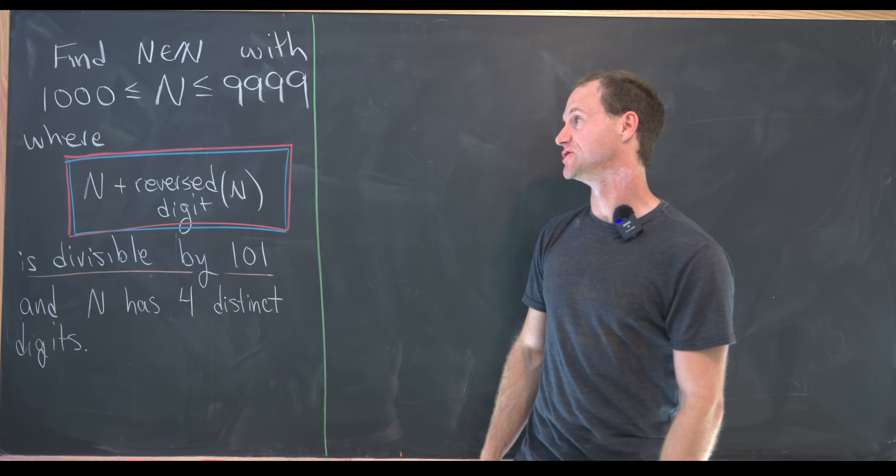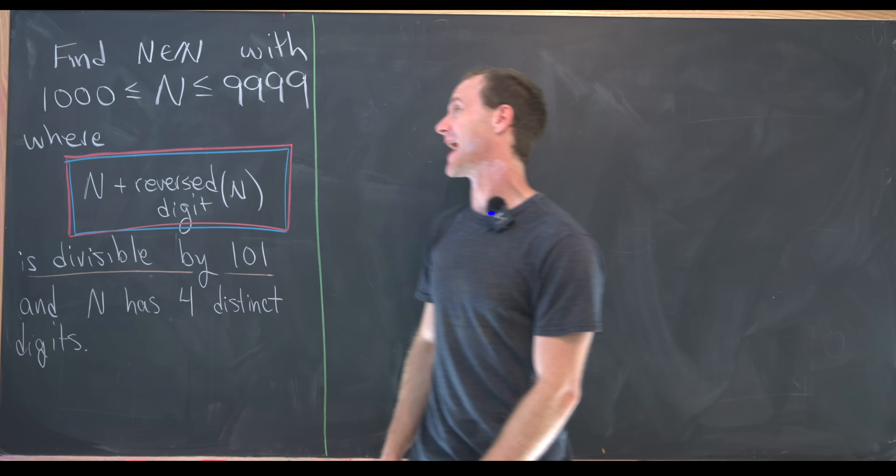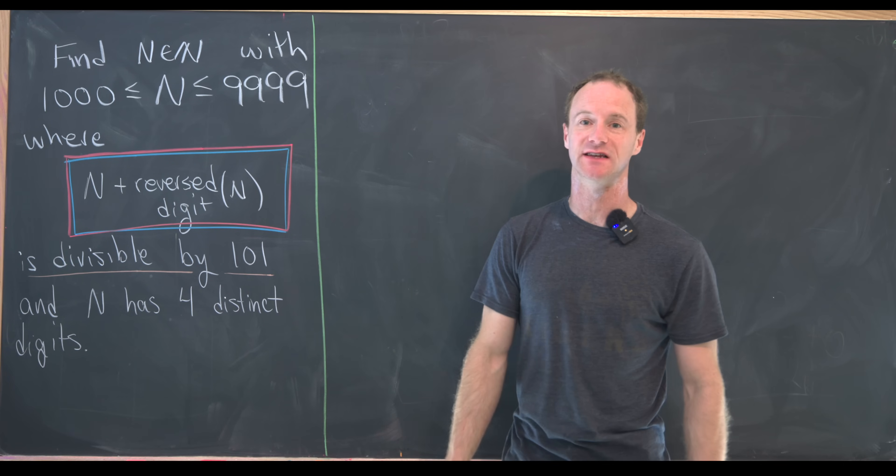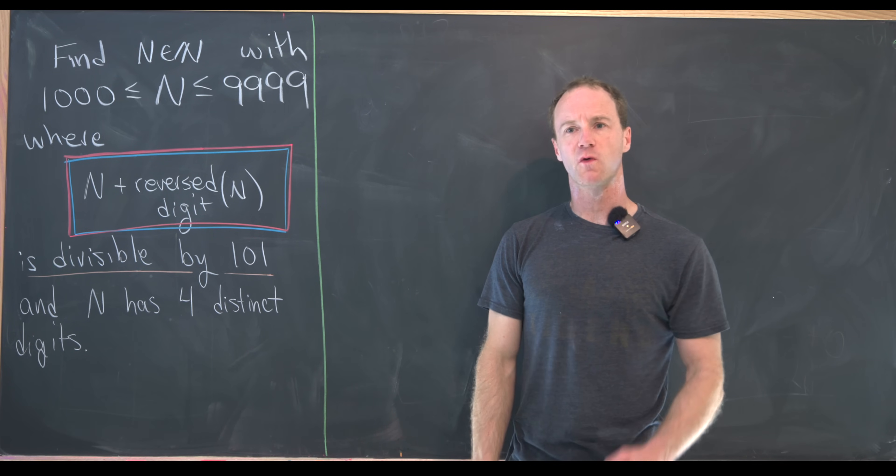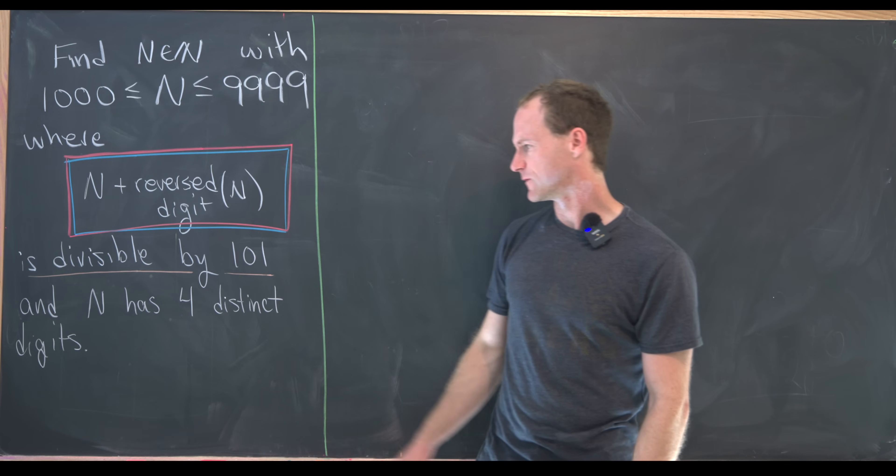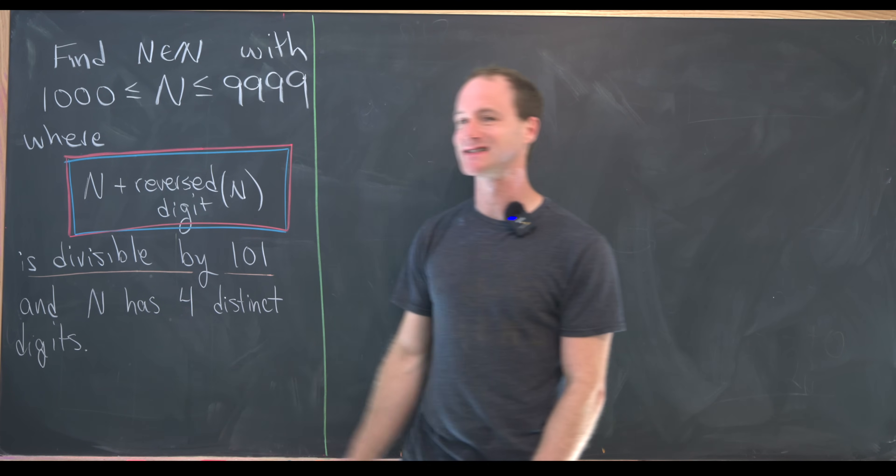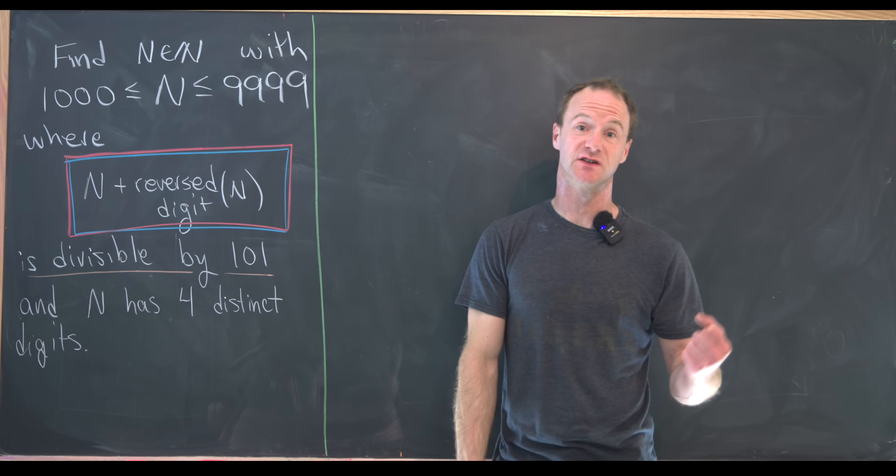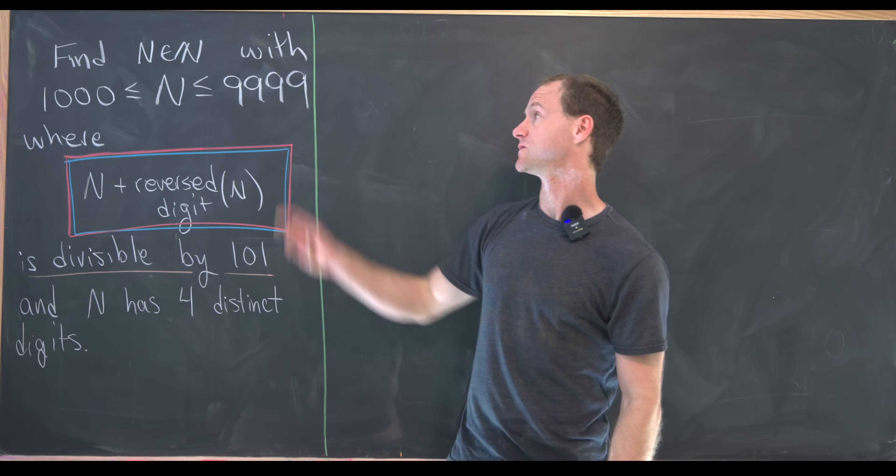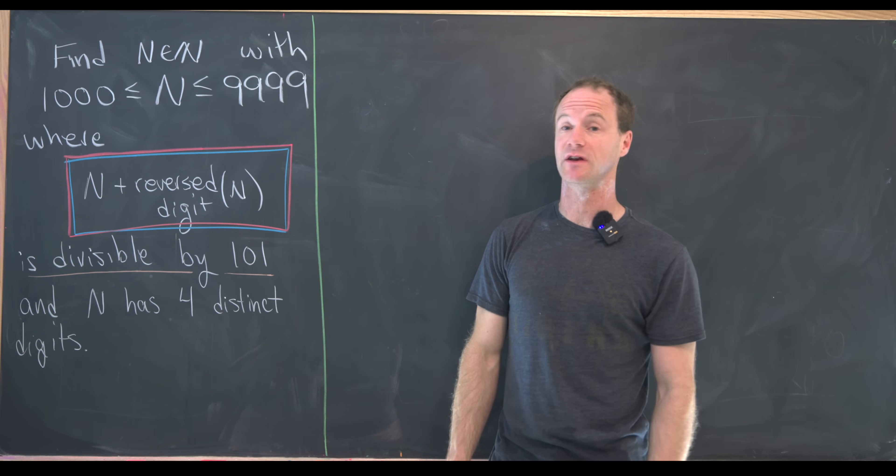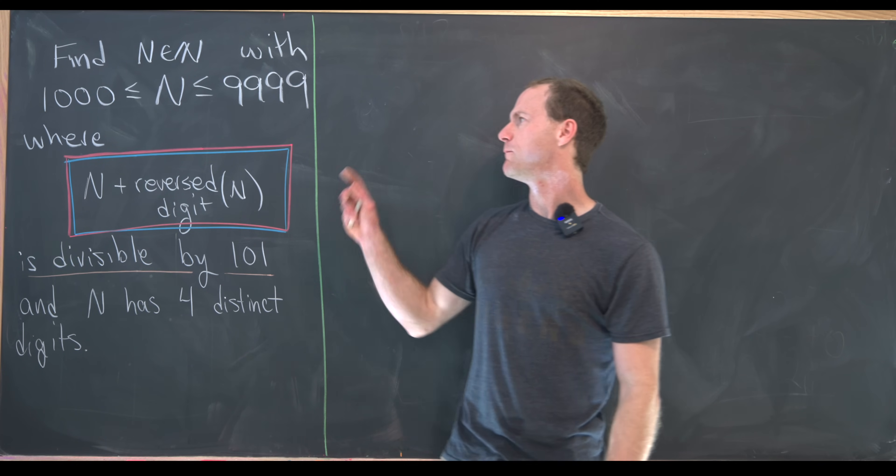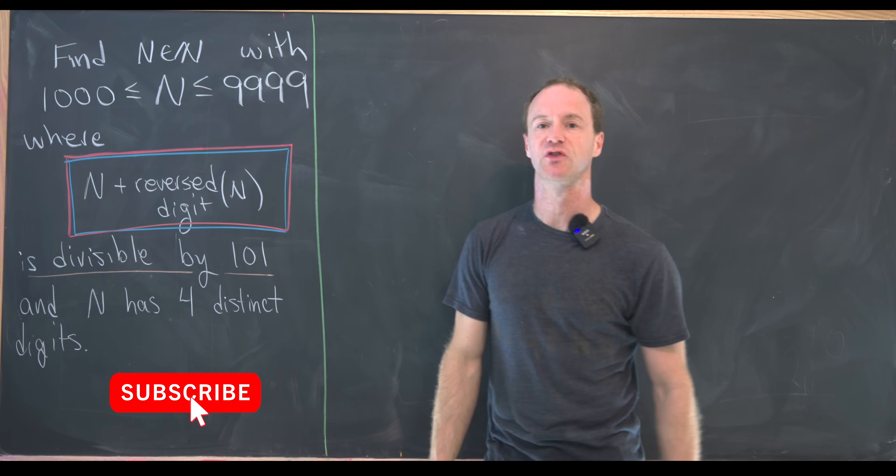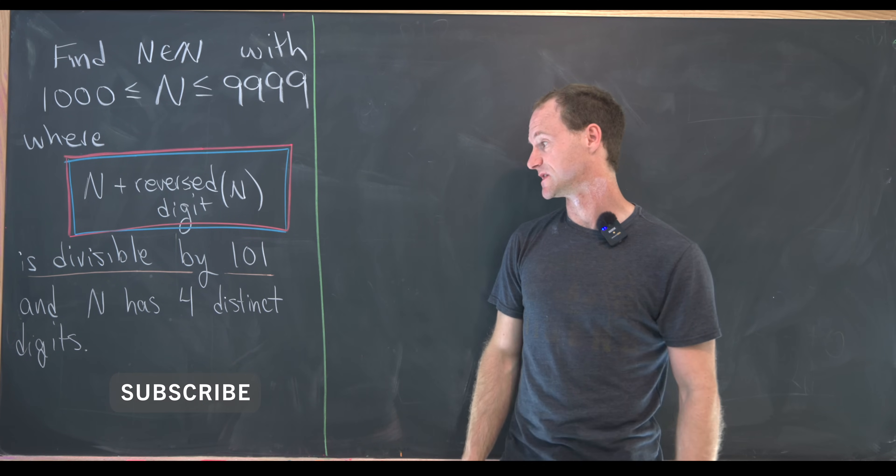N has four digits, so that means it's between a thousand and nine thousand nine hundred and ninety-nine. Furthermore, it needs to satisfy two special conditions. The first of which is it has four distinct digits. So notice it's not allowed to be a thousand because that has three zeros. It's also not allowed to be nine thousand nine hundred ninety-nine because that has four nines. But perhaps it's any number between those that has four distinct digits.